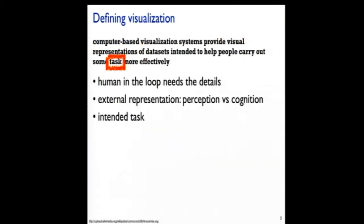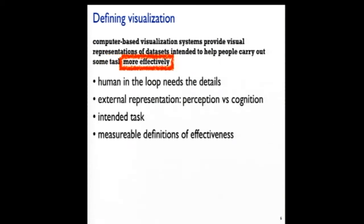Another really crucial word here is task — there is a specific reason that you are drawing this picture, because there are many pictures you might draw and they support different kinds of tasks in different ways. It's not ever just about the data; it's also what questions are you asking with that data. And then there's this crucial phrase: more effectively. A fair amount of this talk will be about how you can validate any of these methods and decide when you're actually helping a human do something more effectively.